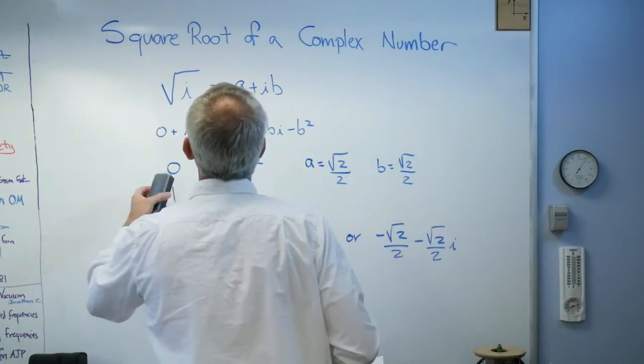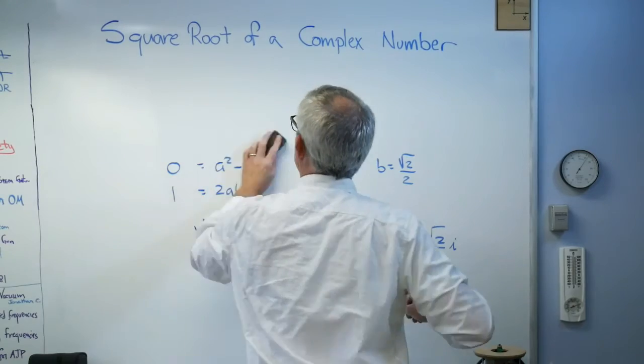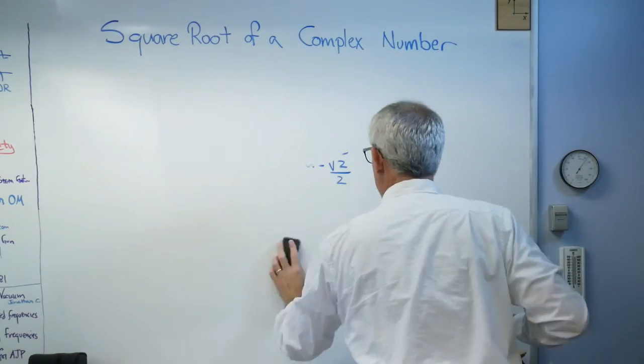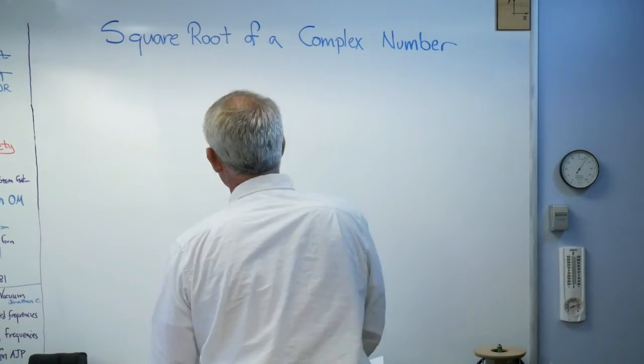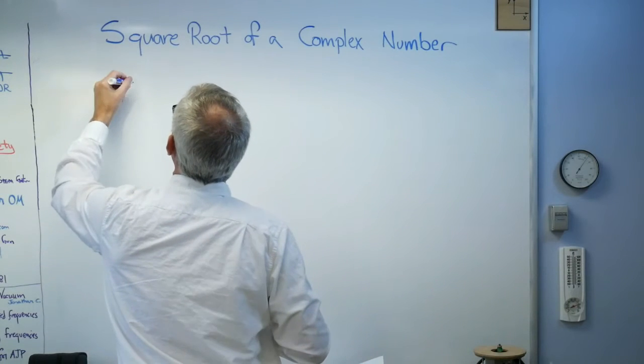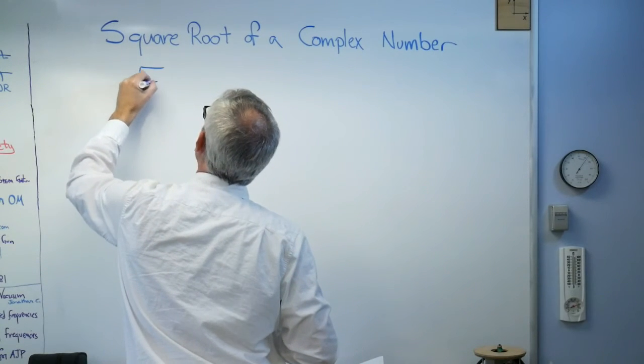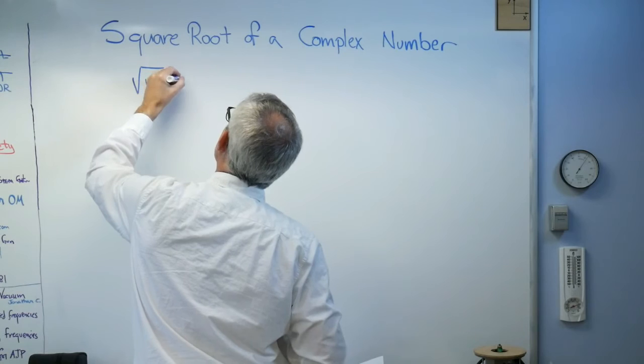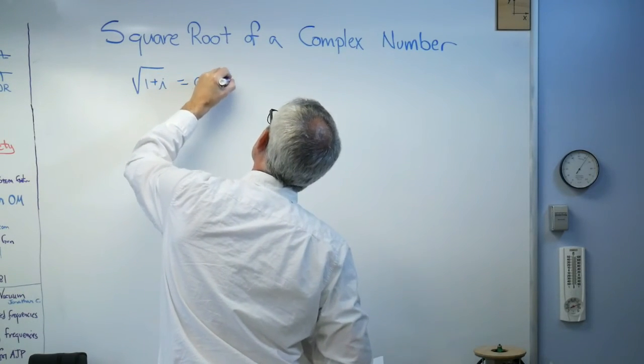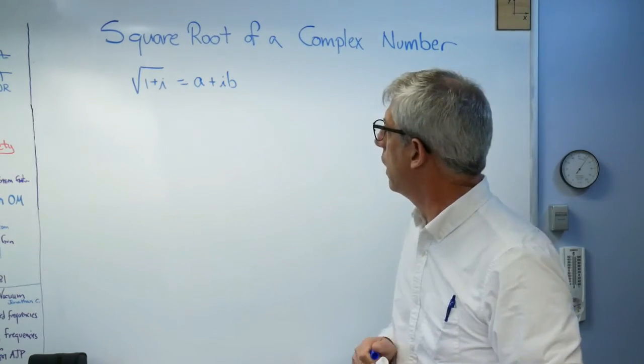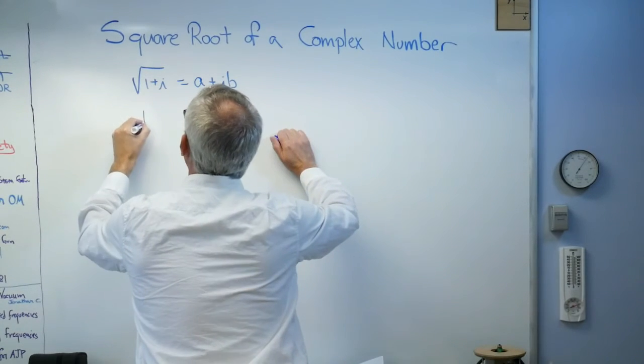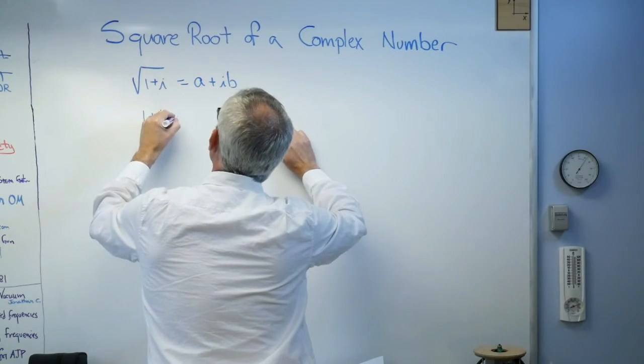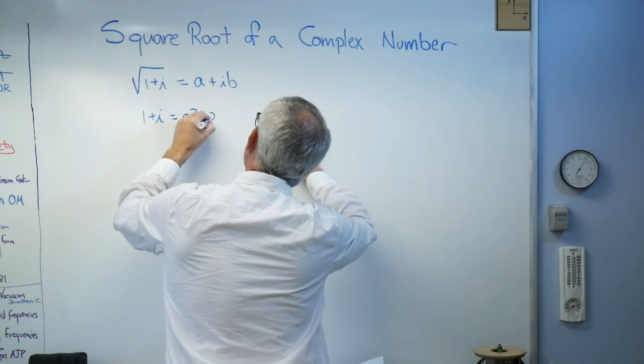This is also true. So be careful. Make sure you get your pluses and minuses arranged correctly here. Let's do one more. Go a little bit more complicated. Once you've done two of them, you can do any number of them. All right, so let's try that. One plus i. We'll also assume that's a plus ib. And if I square both sides, I get the exact same thing we had before.